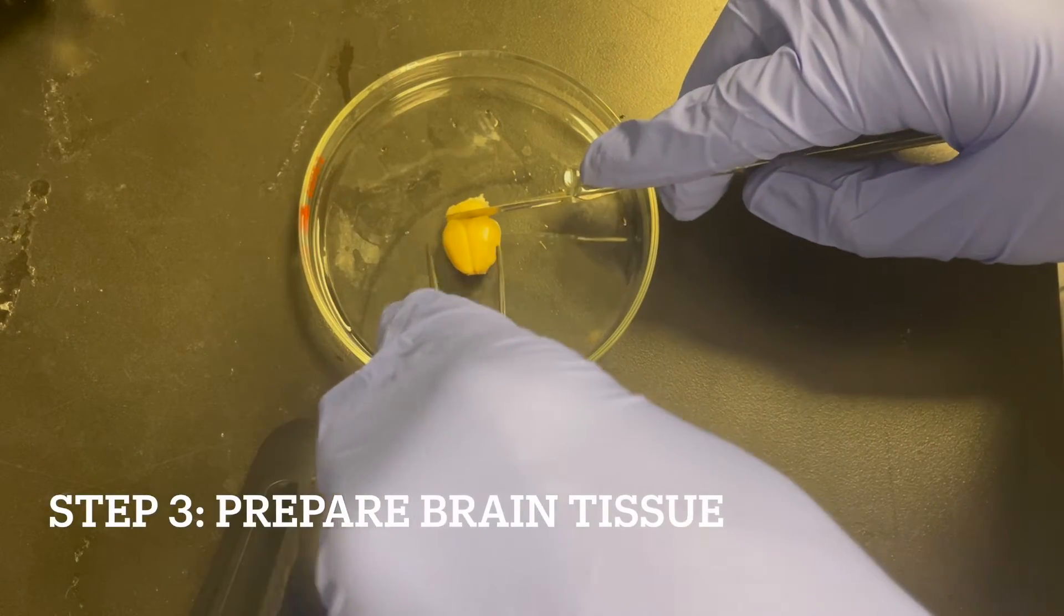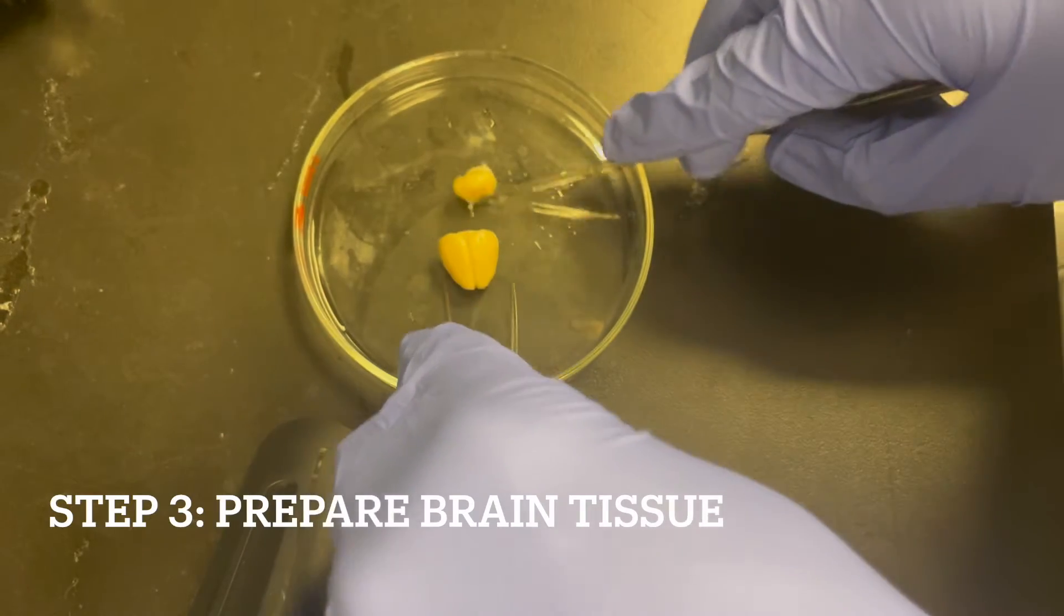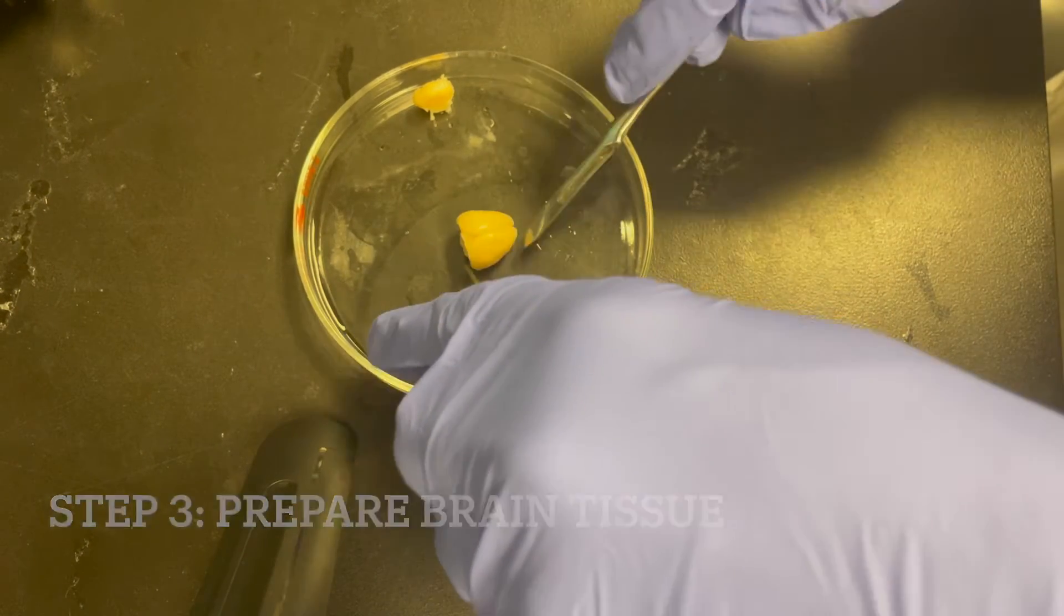Now to prepare the brain tissue for mounting, we cut off the cerebellum from the brain. This is a very important step because it creates a flat edge that can be used for mounting. Ensure a straight and precise cut.